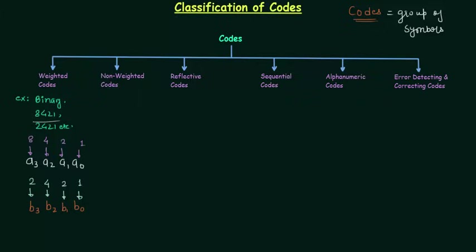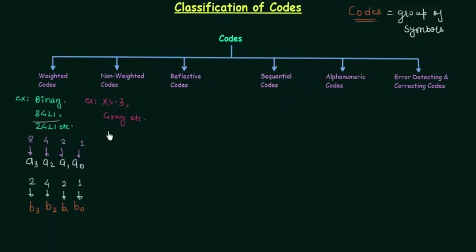Now we will move to non-weighted codes. As you already know weighted codes, it is very simple to guess what non-weighted codes are. In non-weighted codes there is no positional weight. Examples include the excess-3 code and gray code. We will study these two codes in coming presentations, and you will find there is no positional weight in excess-3 and gray codes.